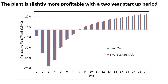The plant is slightly more profitable with a two-year startup period. This sensitivity analysis involves changing the time required for the plant to reach full capacity. In the base case it takes three years to achieve 100% capacity; in this analysis full capacity is achieved in two years. This change increases the ATROR from 19.5% to 20.2%, the cumulative plant net worth increases by $2.2 million, and the plant is paid off one year sooner, with a net payback of 40.7 cents per pound cumene. The plant is recommended to be built if the startup can take two years.